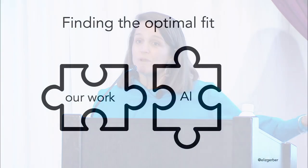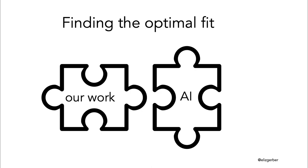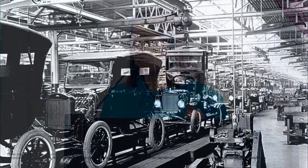AI is doing great things — go AI, I'm supportive — but we need to reframe the question from 'what can't AI do?' to 'what's the optimal fit between our work and what AI can do?' It's about the conversation between the work that brings us meaning and satisfaction, and what AI can do.